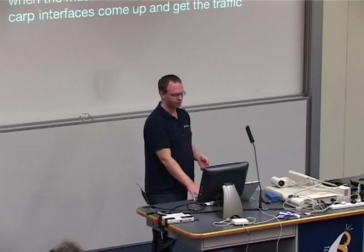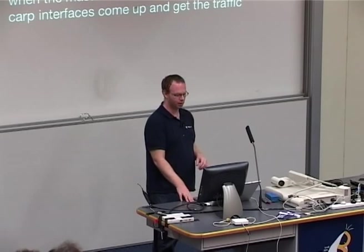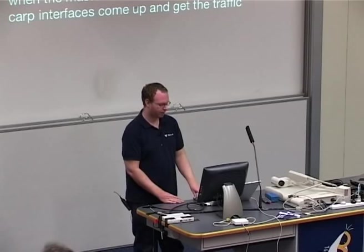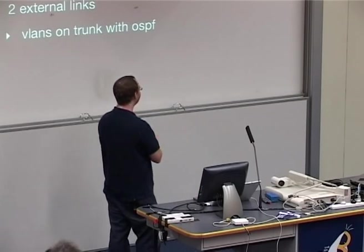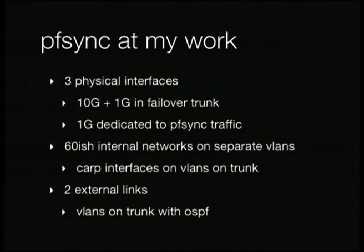When the master loses power or state, the backup will take over and forwarding continues. At my work, it's a little more complicated — I have 60 networks but only three physical interfaces on the firewall: a 10 gig, a 1 gig link, and a failover trunk. As long as the 10 gig link is up it'll be used; if not, it switches to the spare 1 gig link. I have a 1 gig physical link dedicated to PFSync traffic. On top of the trunk interface I stack the 60 VLAN interfaces, and on each of those I put a CARP interface.